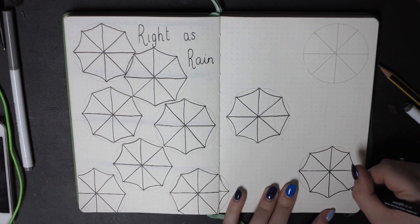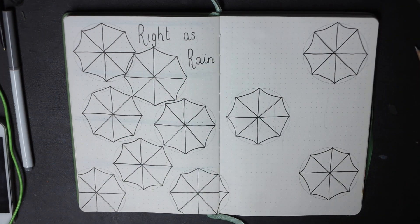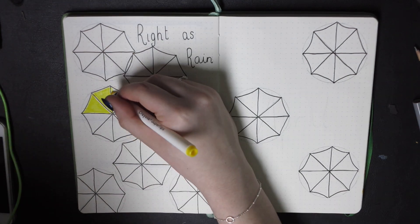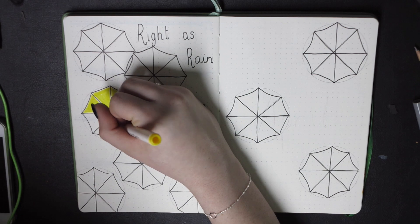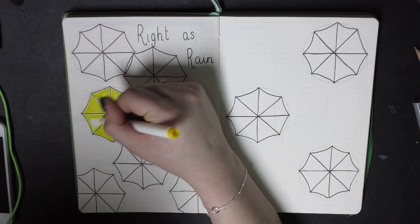I also forgot to mention that the pen I'm using isn't the usual uni pin pen. I'm using a 0.5 uni pin instead of a 0.1. I personally usually don't like using a thicker pen, however I actually like this look. It's quite a bold look, especially with the yellow umbrella.